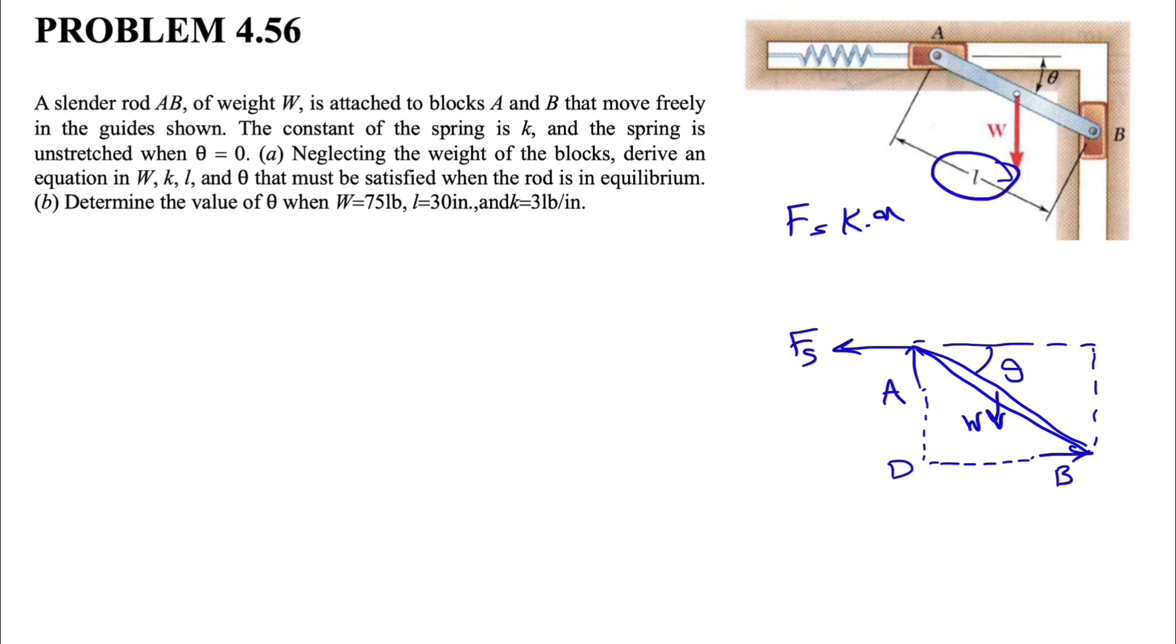The length of the rod is L. So we can find the two sides that we have here. This will be L cosine of theta, and here we will have L sine of theta. Now that we have this, we can start, since we are in equilibrium. Sum of all forces equals zero, and sum of all moments equals zero. But let's find the force of the spring first.